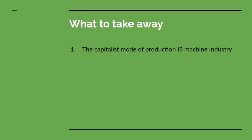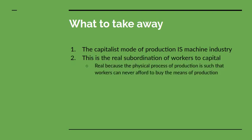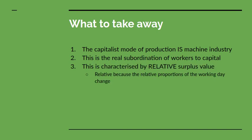What do we take away from this? The first point is that capitalist mode of production is machine industry — that's what the capitalist mode of production means. This is the basis for the real subordination of labour to capital. It's real because the physical process of production is such that the workers can never afford to buy the means of production, nor could they individually operate them. It's characterized by what he calls relative surplus value — he calls it relative because the relative portions of the working day change: the portions that constitute surplus and the portion that constitutes necessary time.